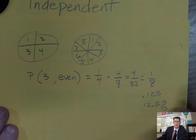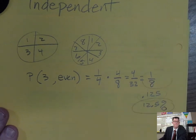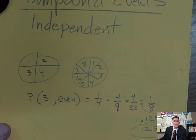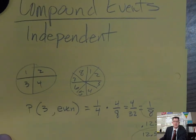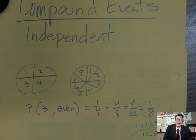Independent compound events — just find the probability of each item and multiply them together. That's it! Hopefully that makes a little sense and helps you understand independent compound events. Have a great and wonderful day!